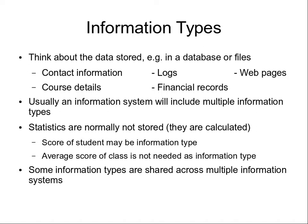Some people listed statistics as an information type. If you think from a database perspective, the statistics of data are not normally stored — they're calculated. So it may be easier to treat statistics not as an information type, but as something obtained from the information. For example, the score or grade of a student in a course may be an information type — many people listed that, and that's okay. But the average score for the class doesn't need to be listed as a separate information type, since we can obtain that from the scores quite easily. Information types are shared across multiple information systems and many are reused.